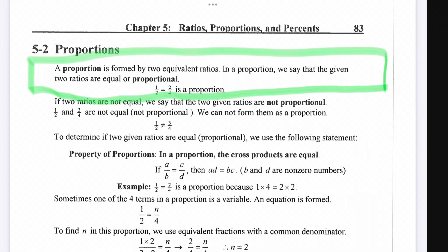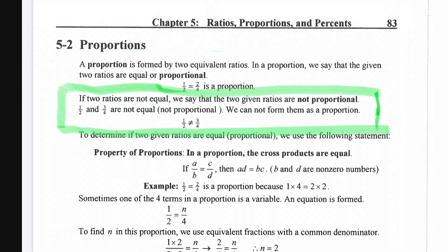One-half equals two-fourths is a proportion. If two ratios are not equal, we say that the two given ratios are not proportional. One-half and three-fourths are not equal or not proportional. We cannot form them as a proportion.